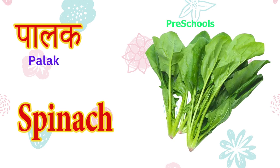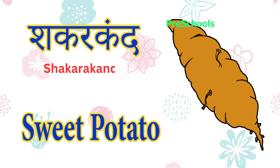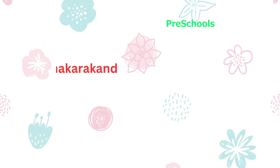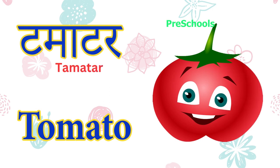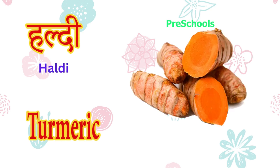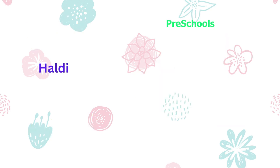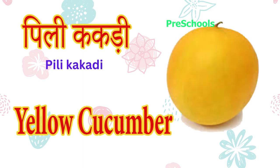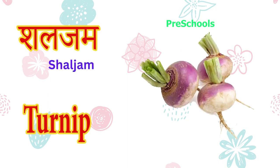Palak matlab — spinach. Shakarkand matlab — sweet potato. Tamatar matlab — tomato. Haldi matlab — turmeric. Pili kakadi matlab — yellow cucumber. Shalgam matlab — turnip.